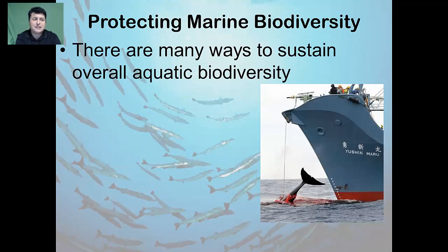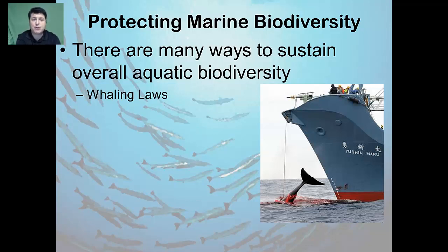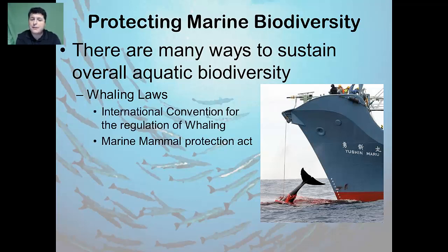There are also many ways to sustain overall aquatic biodiversity beyond just our fisheries. One way is through the establishment of laws. For example, the International Convention for the Regulation of Whaling is an international agreement signed in 1946 to provide for the conservation of whale stocks and the orderly development of the whaling industry. It governs commercial, scientific, and aboriginal subsistence whaling practices for 59 member nations. Another major law is the Marine Mammal Protection Act, which prohibits, with certain exceptions, the take of marine mammals in U.S. waters by U.S. citizens and the importation of marine mammals and marine mammal products.